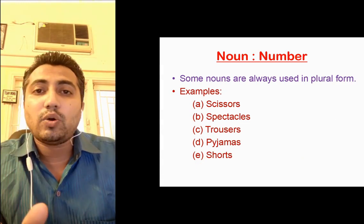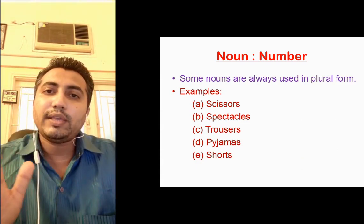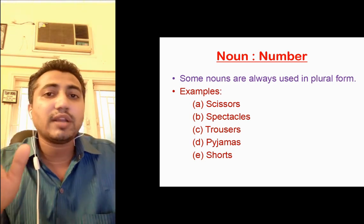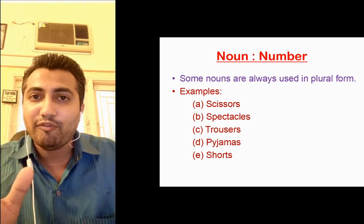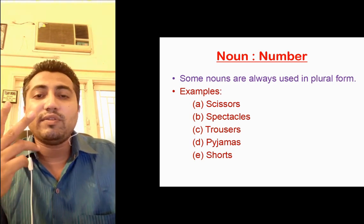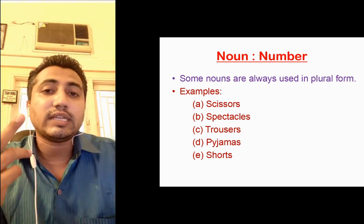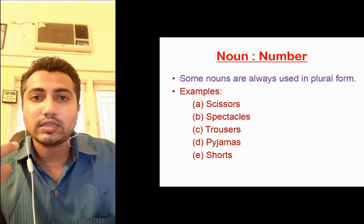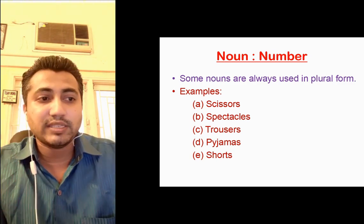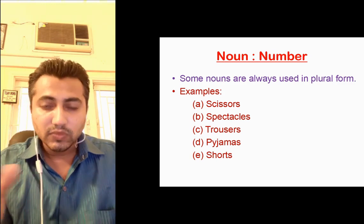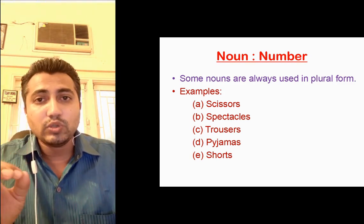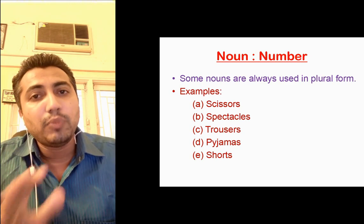There are some nouns which are always in plural form — they are never singular. For example: scissors (we say 'a pair of scissors'), spectacles, trousers, pyjamas, shorts. All these are nouns which are always in plural.